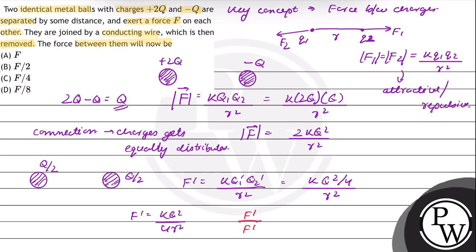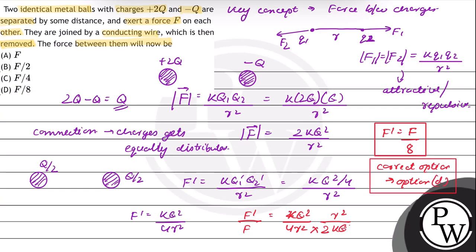So F dash upon F will be equal to K Q square by 4 R square into R square upon 2 K Q square. So this can be written as F dash is equal to F by 8. So the force between them will now be F by 8. So the correct option will be option D that is F by 8. Hope you understood this well, best of luck.